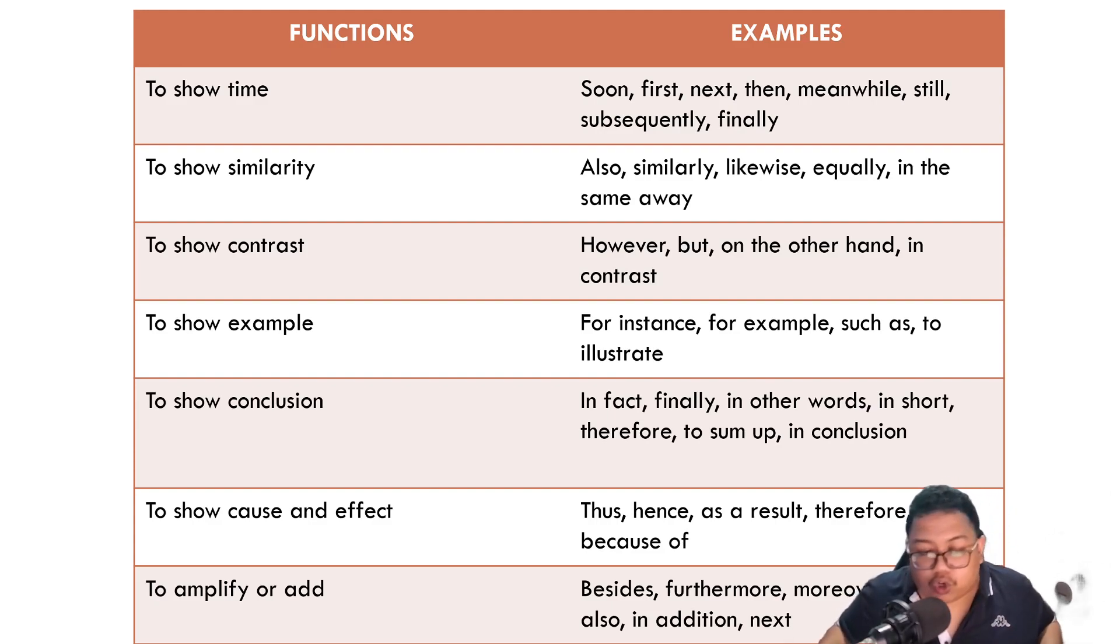Next one, you want to show cause and effect. Maybe something happened because of something, and then the effect is here. So you can use thus. If students keep on being lazy, then hence, they will keep on getting lazy. For example, so the cause is lazy, then they have other effect. Or then you can use either to amplify or add. So you want to add on, or maybe you want to focus that your point is important, and you want to add something else, which besides, furthermore, moreover, and also, in addition, next.